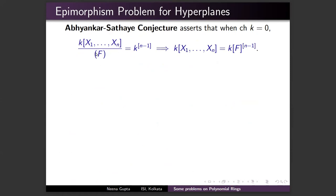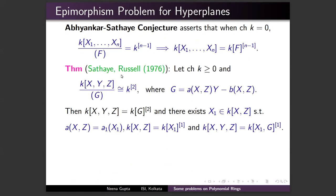This leads to the Abhyankar–Sathaye conjecture: if f defines a hyperplane — that is, k[x₁, …, xₙ]/(f) is a polynomial ring in n−1 variables — does that necessarily imply f is a coordinate? For n = 3, Sathaye proved in characteristic zero, and Peter Russell for arbitrary characteristic, that if g is a polynomial linear in y with coefficients from k[x, z], and g defines a plane, then g must be a coordinate. They showed you can find x₁ ∈ k[x, z] such that the coefficient of y is a polynomial in x₁, and g is a coordinate along with x₁.